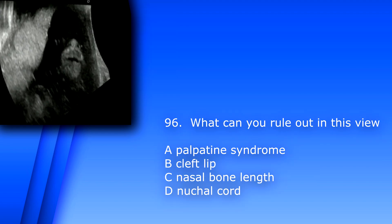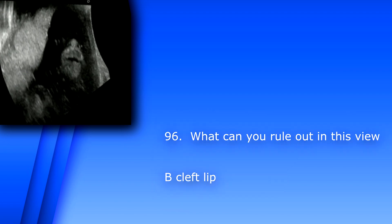Question 96. What can you rule out with this view? A. Patau syndrome. B. Cleft lip. C. Nasal bone length. D. Nuchal cord. The answer is B, cleft lip.